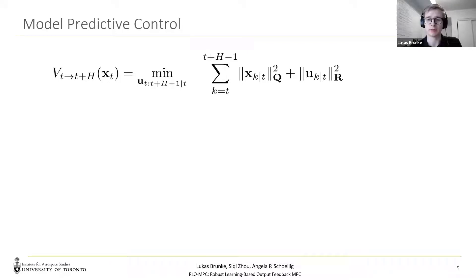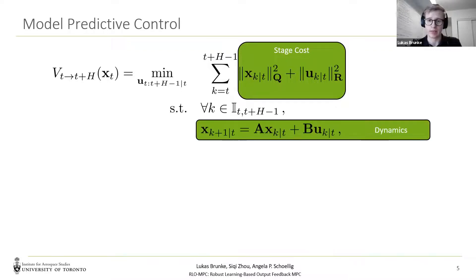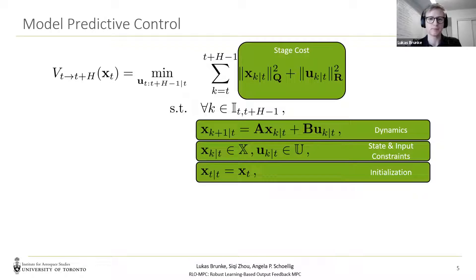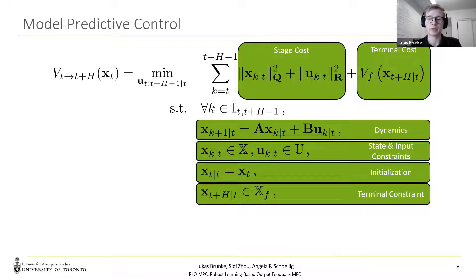In MPC, the goal is to minimize an objective function over a finite number of steps, the horizon H, and the subscript with bar t describes the quantity predicted at time t. In our case, the objective function consists of the stage cost, which assigns a cost to each state and associated control input. This objective is subject to our dynamics, which for example describe the motion of the robot, and the state and input constraints of our system and the initial condition. And for stability, we also require a terminal cost function which accounts for the infinite horizon, and a terminal constraint set which guarantees that a feasible solution at one time step implies a feasible solution at the next time step.